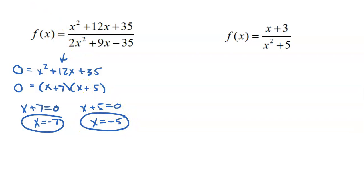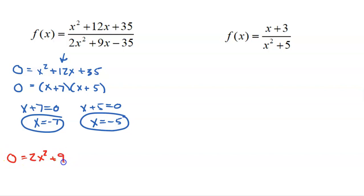But if I stop now I'm potentially going to make a grave mistake, because what if negative seven or negative five also make the denominator zero? Then they're not in the domain and should not be listed as zeros. So I also have to determine what values make the denominator equal to zero, which requires factoring the denominator too. If you're bad at factoring, you could use the quadratic formula.